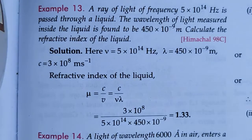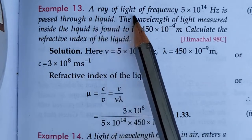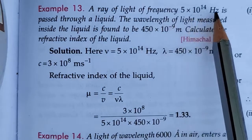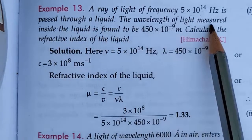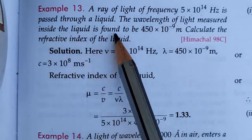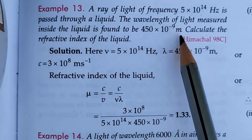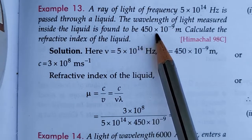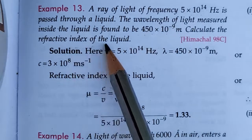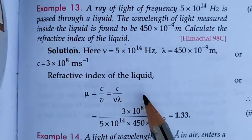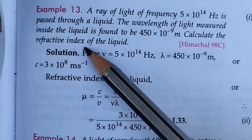First example: a ray of light of frequency 5 × 10¹⁴ Hz is passed through a liquid. The wavelength of light measured inside the liquid is found to be 450 × 10⁻⁹ meter. Calculate the refractive index of the liquid.